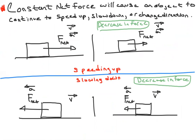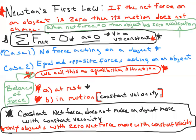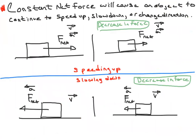Newton's first law told us that when objects have a balanced force, they're going to be at constant velocity or at rest — they still have forces applied to them. If you have a constant net force — not just force — that will cause an object to speed up, slow down, or change direction continually.